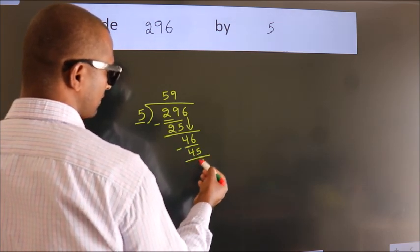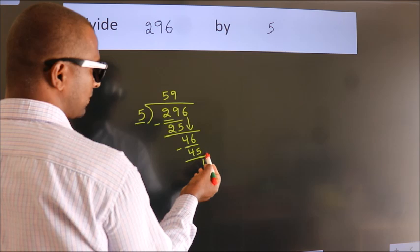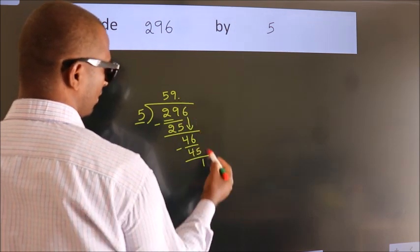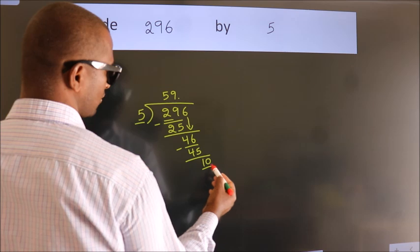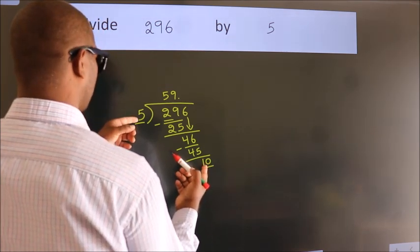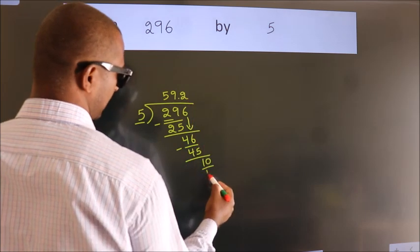After this, no more numbers to bring it down. So what we do is, we put dot take 0. So 10. When do we get 10? In the 5 table, 5 twos 10.